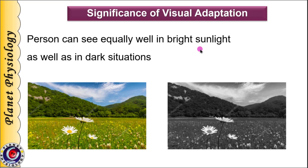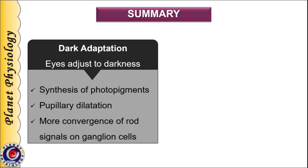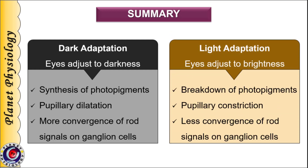It helps a person to see equally well in bright sunlight as well as in dark situations. To summarize: during dark adaptation, eyes adjust to see in darkness by increasing synthesis of photopigments — mainly rhodopsin — pupillary dilatation, and increasing rod signal convergence on ganglion cells. During light adaptation, eyes adapt to see clearly in brightness by breaking down photopigments, constricting the pupils, and reducing the amount of rod signal convergence.